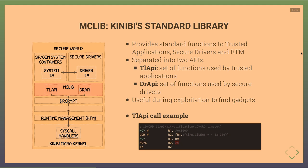The MCLib is Kinibi's standard library, providing standard functions for trusted applications, secure drivers, and RTM. It is separated into two sets of APIs: the TLAPI for trusted applications and the DRAPI for secure drivers. This library is especially useful during exploitation because it is where most ROP gadgets are found.